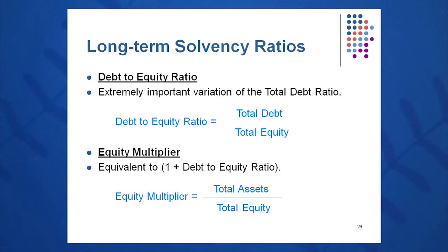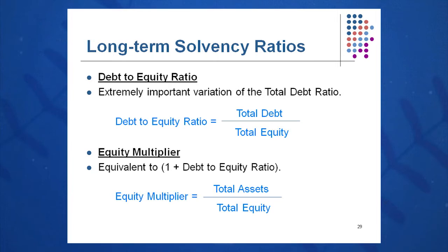These three long-term solvency ratios are all tied together — if you have one, you can derive the other two through simple mathematics. The third important one is the equity multiplier: total assets over total equity, sometimes called the assets-to-equity ratio. It can be expressed as one plus the debt-to-equity ratio, because assets equal equity plus debt, divided by equity. So memorize any one of these three and you have the other two.